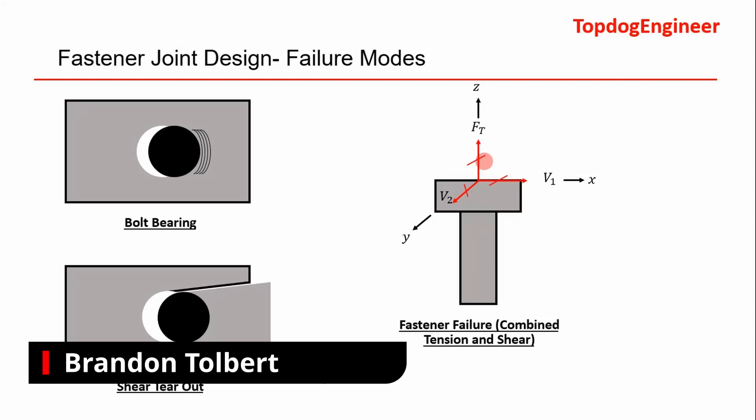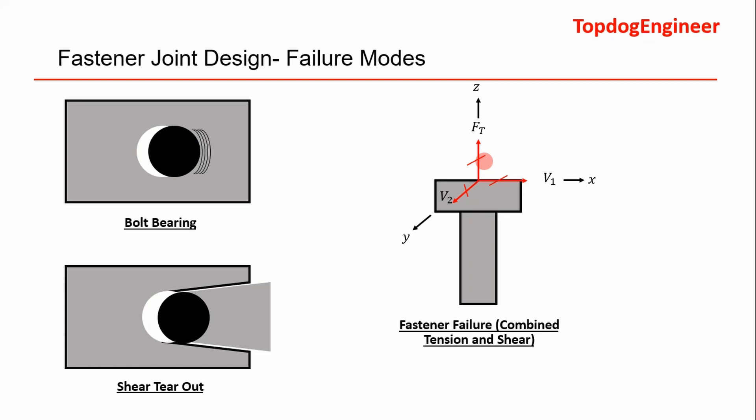Welcome, compadres. Today I'm going to introduce you to fastener joint design. As a structural analyst, there are really three failure modes we consider when we look at fastener joint design: bolt bearing and shear tearout, and also fastener failure.